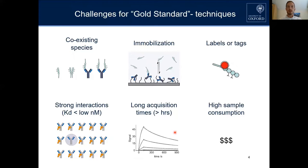In general, it is really difficult to quantify strong interactions in the low nanomolar or below range, because you either have to go to very low concentrations or your instrument needs very high sensitivity to detect the small number of unbound species in the large quantity of complex species. This often means long acquisition times and high sample consumption, which can be very expensive or even impossible depending on how much protein you can express.